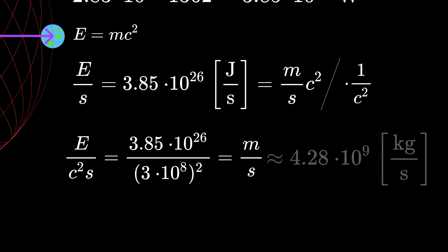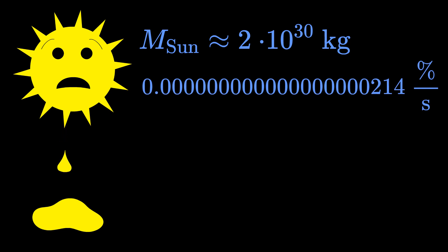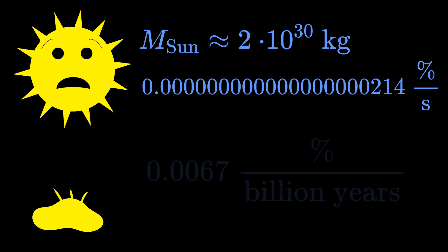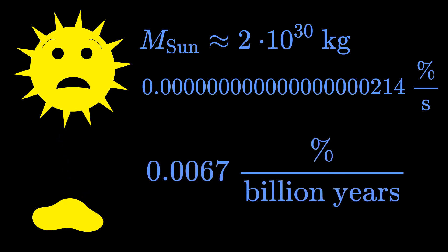So this is why the Sun is lighter by 4.28 billion kilograms every second. It seems like a lot, but if you consider the total mass of our Sun, which is 2 times 10 to the 30 kilograms, then you will find out that it is just this small percentage of the Sun's total mass every second, which is roughly 0.0067% of Sun's mass per billion years.